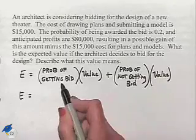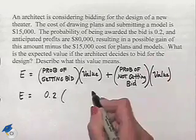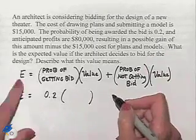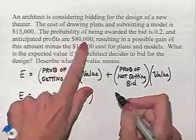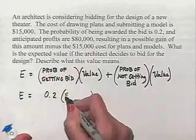Now the probability of getting the bid is given to us as two-tenths. The value associated with getting the bid would be profits of $80,000 minus the cost of $15,000, which would be $65,000.